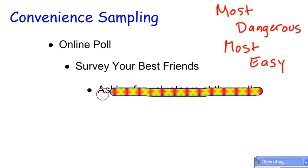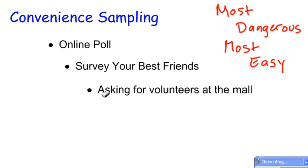Another example of convenience sampling might be asking for volunteers at the mall. You're walking through the mall and there's a person with a clipboard — the type of people that you try to avoid most of the time because you don't want to stand there for four or five minutes and get interviewed by them. But that's convenience sampling because they're just trying to ask people.